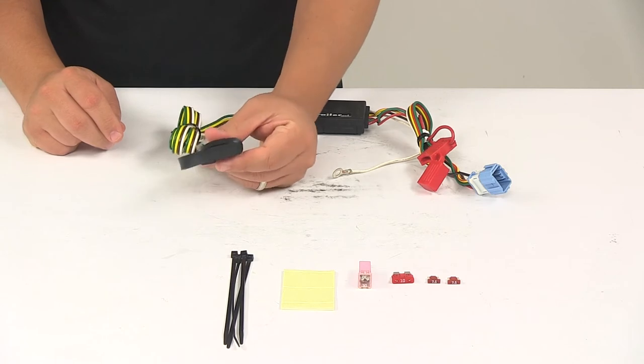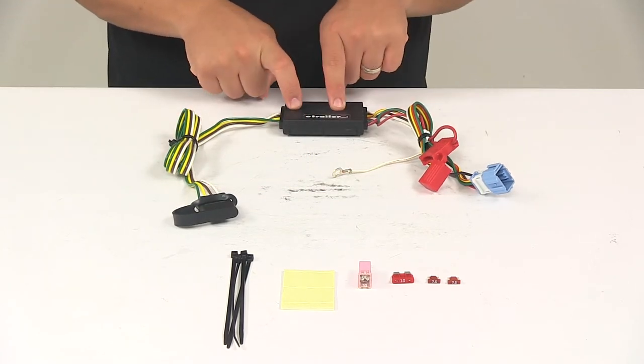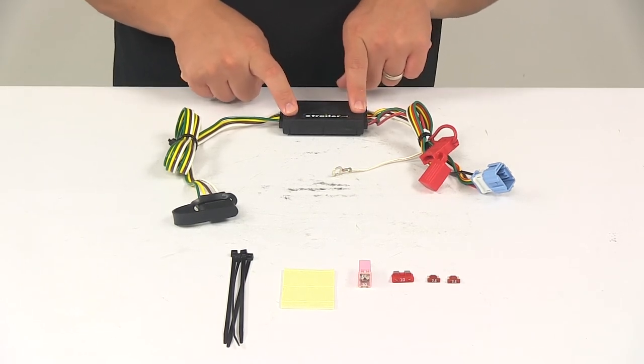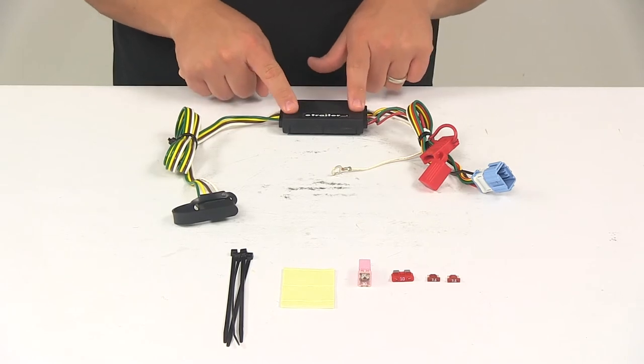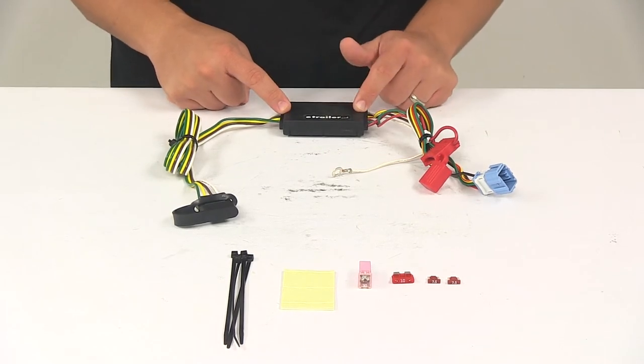That way you can cover up the connection points when it's not being used. All the wires run to this black box. This is the included taillight converter. This box ensures that your vehicle's wiring matches out of your trailers, so this powered module connects directly to the vehicle battery through the wiring, which avoids overloading your vehicle's electrical system.